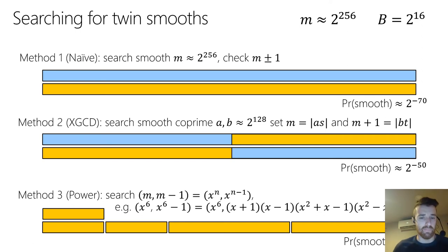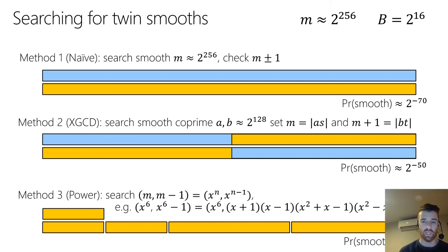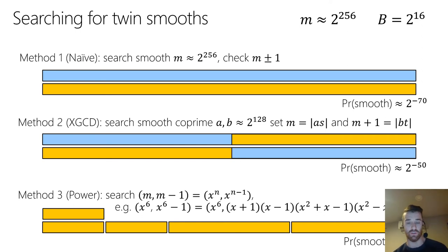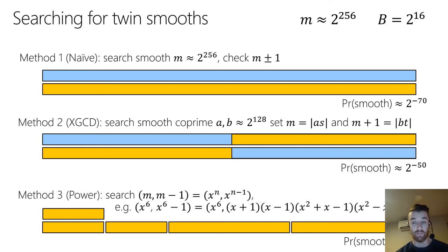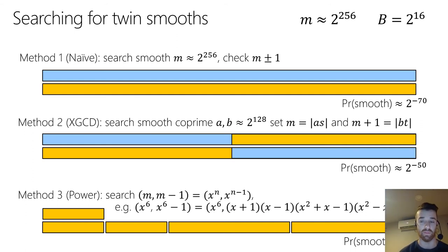The second method uses the extended GCD approach. You choose A and B both roughly 2^{128} and co-prime, compute the numbers S and T from the extended Euclidean algorithm, and hope that S and T are both smooth as well. The probability of smoothness here is roughly 2^{−50} — a little better, but the chances of both orange chunks of the numbers being B-smooth is still rather low.